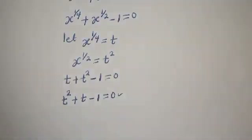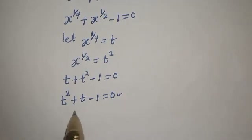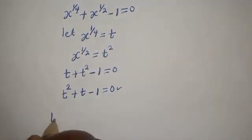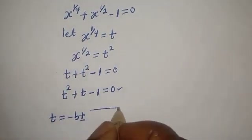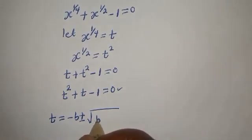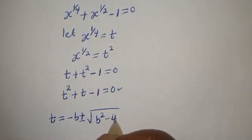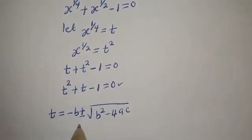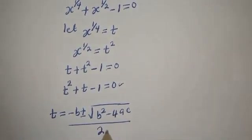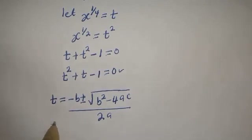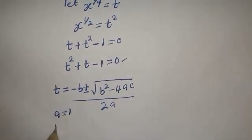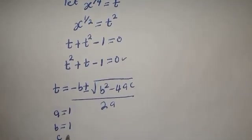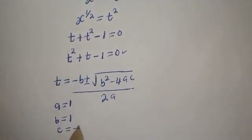This is a quadratic equation which can be solved with the quadratic general formula. The quadratic general formula is given as t is equal to minus b plus or minus square root of b squared minus 4ac, over 2a. From this equation, a is equal to 1, b is equal to 1, and c is equal to minus 1.